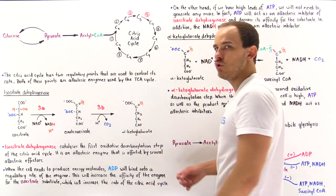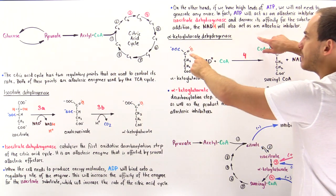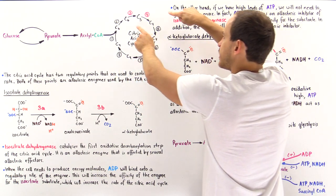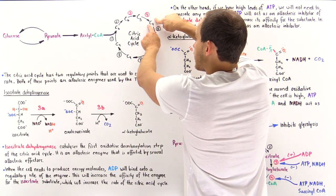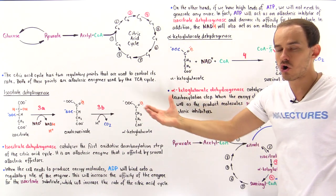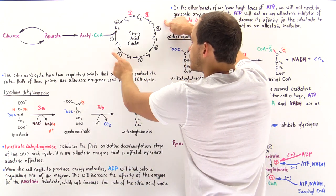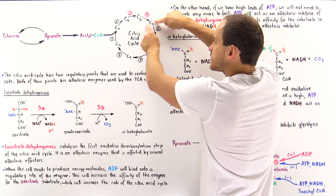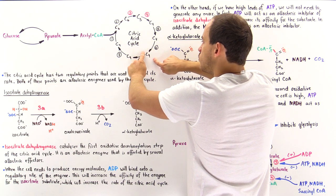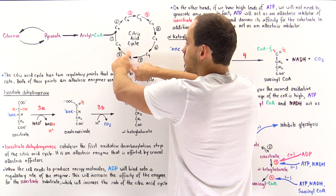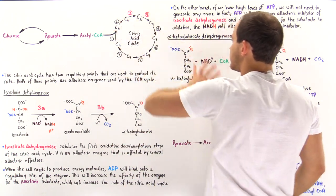Step three produces alpha-ketoglutarate. The alpha-ketoglutarate, catalyzed by an enzyme known as alpha-ketoglutarate dehydrogenase, undergoes step four, another oxidative decarboxylation step, to produce a four-carbon molecule known as succinyl coenzyme A. In the next series of steps, succinyl coenzyme A is transformed into succinate, then into fumarate, then into the L-isomer of malate, and malate is transformed back into oxaloacetate, and this cycle repeats itself.